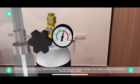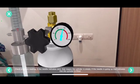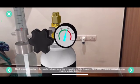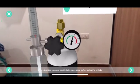If the needle indicates 0, that means the cylinder is empty. If the needle is going up, that indicates the cylinder is filled. Ensure that the pressure needle is in the green zone before using the cylinder.